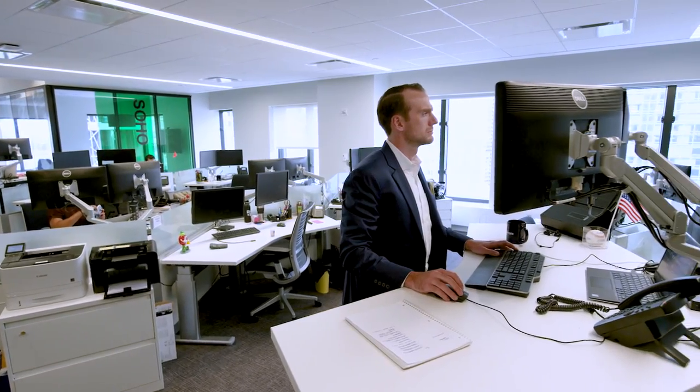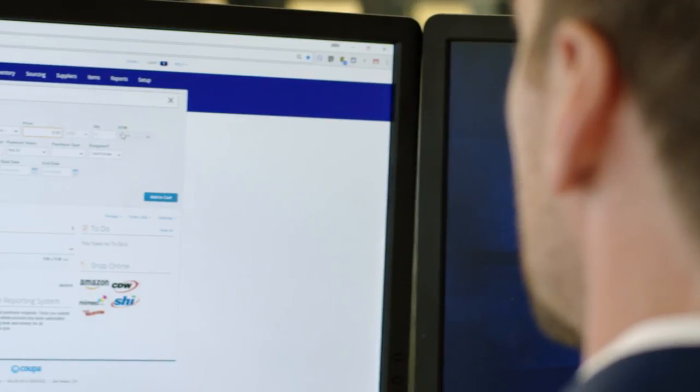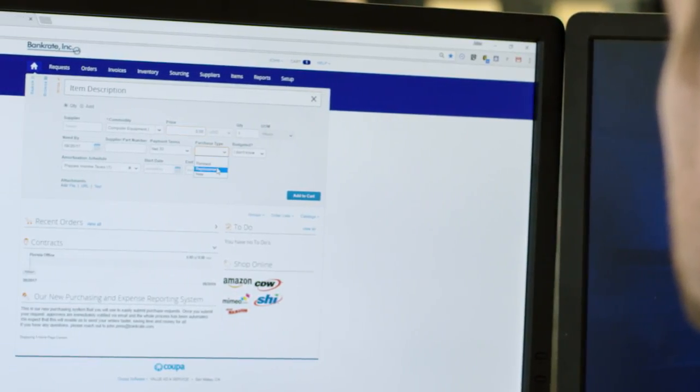One of the key values that we found with Coupa is the efficiency. We're able to shorten the amount of time it takes to process something, whether it be an invoice, a requisition, a PO. We were able to take that time that we saved and shift that into more procurement-oriented areas, more strategic areas, trying to save money, researching ways that we can save money, contract negotiations. All this time was saved from avoiding having to process invoices and doing manual entries.